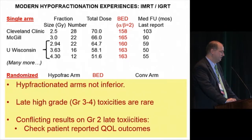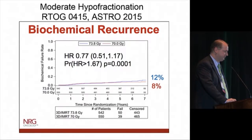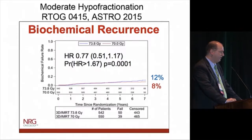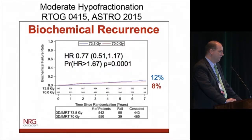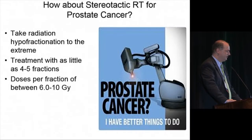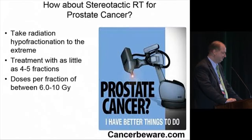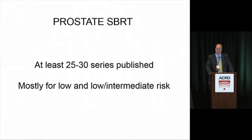A number of single-arm studies and randomized trials have assessed different regimens between 2.4 and 3.4 gray per fraction for modest hypofractionation. In general, the hypofractionation arms have not been inferior; late grade 3-4 toxicities have been rare, with conflicting results about grade 2 toxicities, and patient-reported quality of life has been quite good. The largest North American experience, RTOG 0415 presented at ASTRO, tested the Kapelian regimen of 2.5 gray to 70 gray versus 73.8 gray in 1.8 gray fractions, showing no difference in biochemical control out to 7 years.